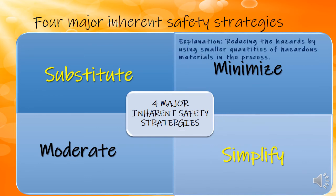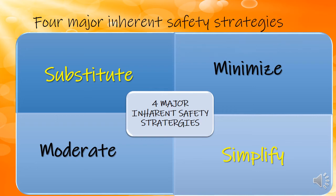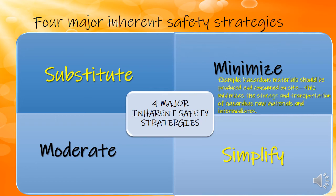For minimize, it is reducing the hazard by using a smaller quantity of hazardous material in a process. For example, hazardous material should be produced and consumed on site. This minimizes the storage and transportation of hazardous raw materials and intermediates.